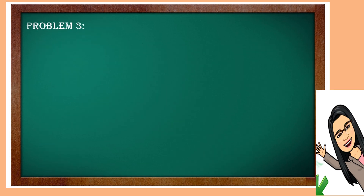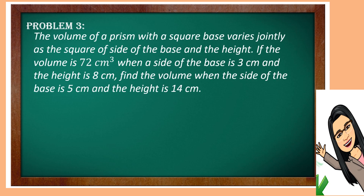Let us solve problem number 3. The volume of a prism with a square base varies jointly as the square of the side of the base and the height. If the volume is 72 cubic centimeters when a side of the base is 3 centimeters and the height is 8 centimeters. Find the volume when the side of the base is 5 centimeters and the height is 40 centimeters. In symbols, it is V is equal to K times S squared times H.